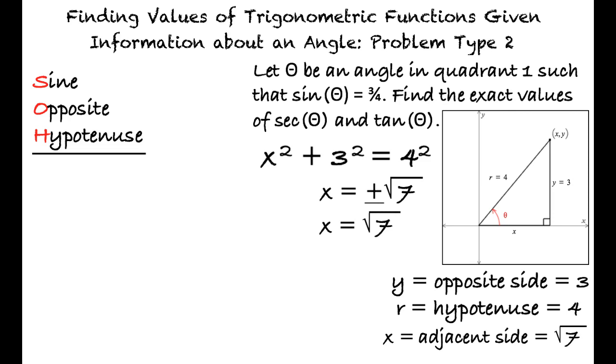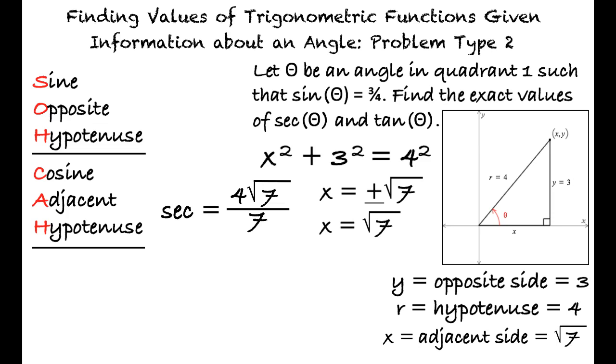Next, we can substitute side lengths into the trigonometric identities for secant and tangent of theta. Secant of theta equals the hypotenuse over the adjacent side, which simplifies to 4 times the square root of 7 over 7.